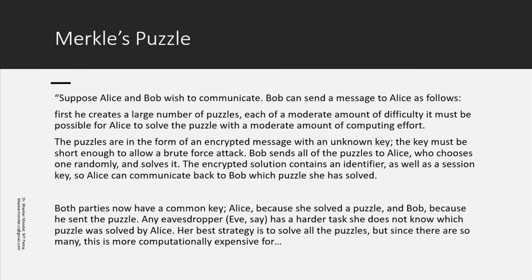Both parties now have a common key — Alice because she solved a puzzle, and Bob because he sent the puzzles. Any eavesdropper does not know which puzzle Alice solved, so her best strategy is to solve all puzzles, which is computationally more expensive. This is where the concept of public key encryption begins, and this concept is also used later in areas like biometric authentication.